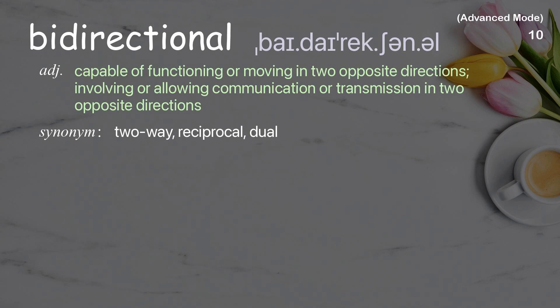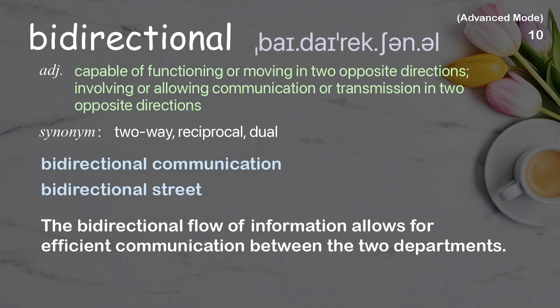Bi-directional: capable of functioning or moving in two opposite directions, or allowing communication or transmission in two opposite directions. Examples: bi-directional communication, bi-directional street. Bi-directional flow of information allows for efficient communication between the two departments.